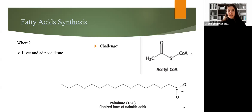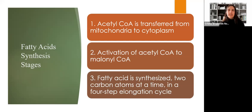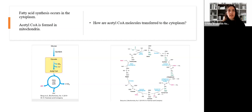So you want to synthesize fatty acids — where do we do that? Liver and adipose tissue. And there is a big challenge. Fatty acid synthesis starts with acetyl-CoA, so we have two carbons, and we want to get to 16 carbons to synthesize palmitate. Fatty acid synthesis occurs in stages: first, acetyl-CoA must be transferred from mitochondria to cytoplasm; second, activation of acetyl-CoA to malonyl-CoA; and third, fatty acid synthesis, which happens two carbon atoms at a time in a four-step repeating cycle.